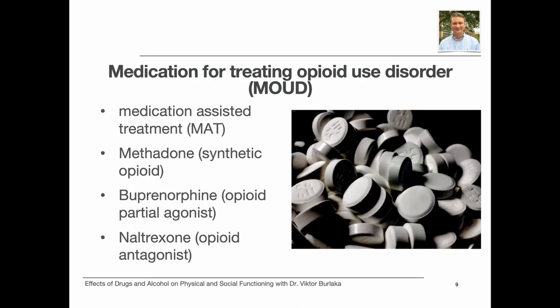Treating opioid use disorder, OUD, often involves prescribed medications as part of an evidence-based intervention plan called Medication Assisted Treatment, MAT. Three medications have been approved by the U.S. Food and Drug Administration for this purpose. They are methadone, which itself is a synthetic opioid, buprenorphine, which is an opioid partial agonist, and naltrexone, which is an opioid antagonist.